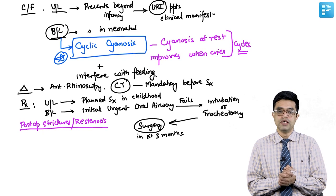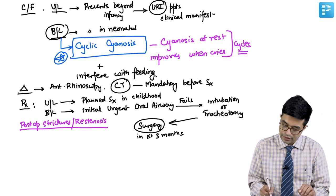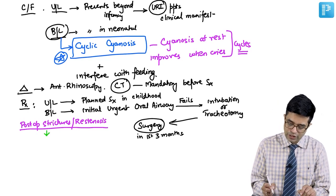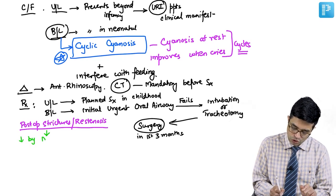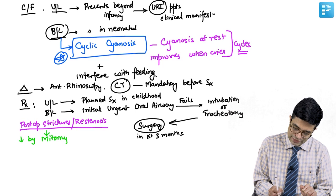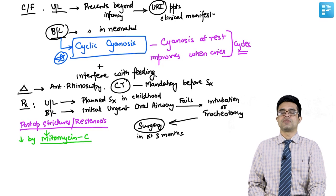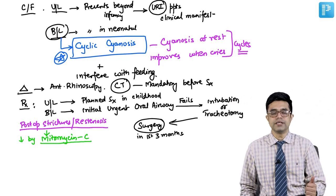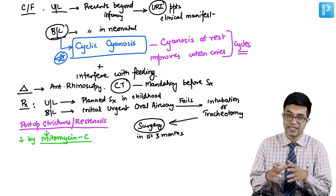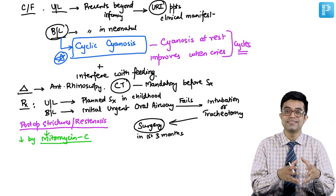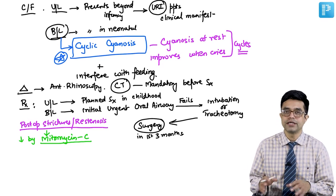Postoperative strictures or restenosis is a common complication. This is a potential MCQ: restenosis can be decreased by application of mitomycin C, although results are conflicting — some studies show a good response, others find it not significant. However, Nelson states that mitomycin C is one of the drugs that can decrease the chances of restenosis and granulation tissue formation.